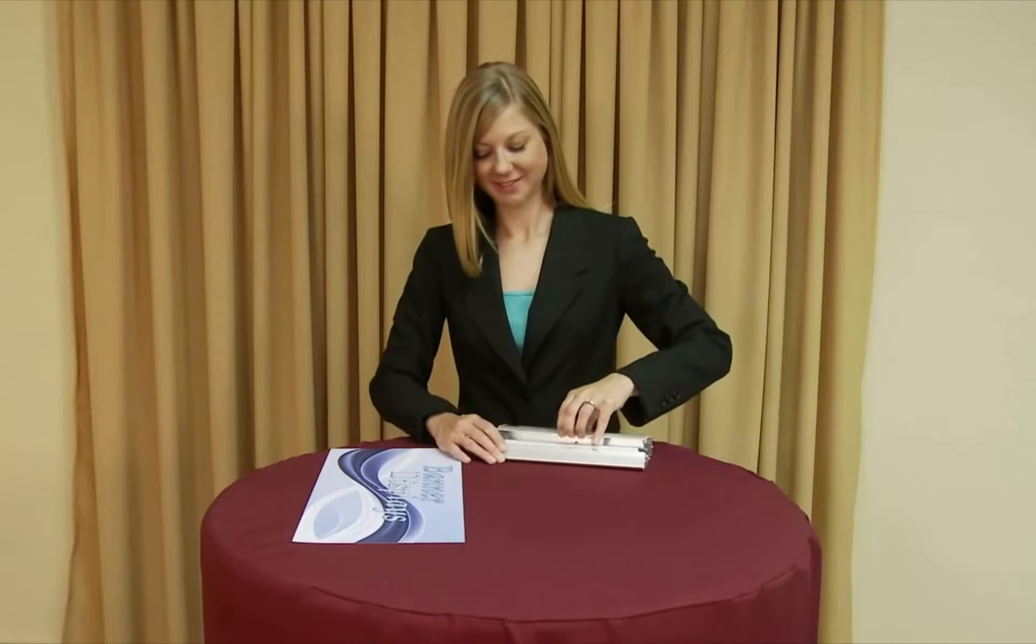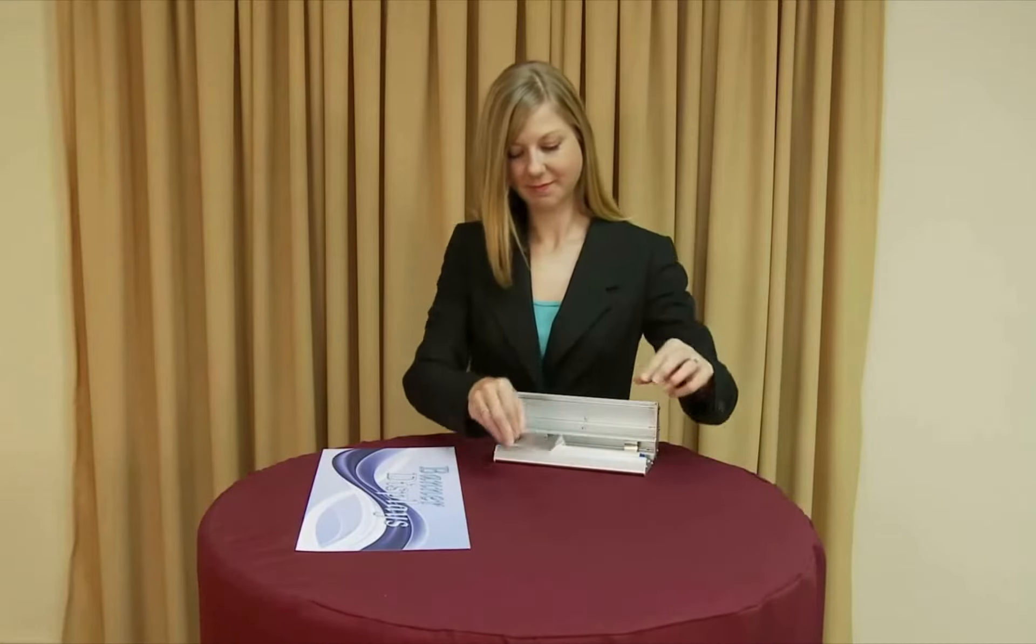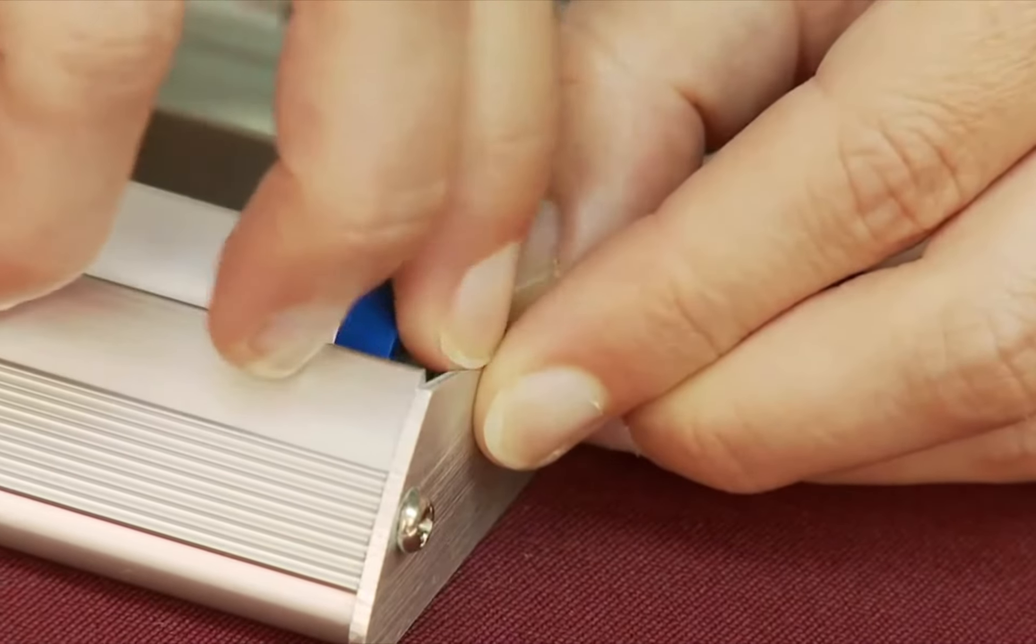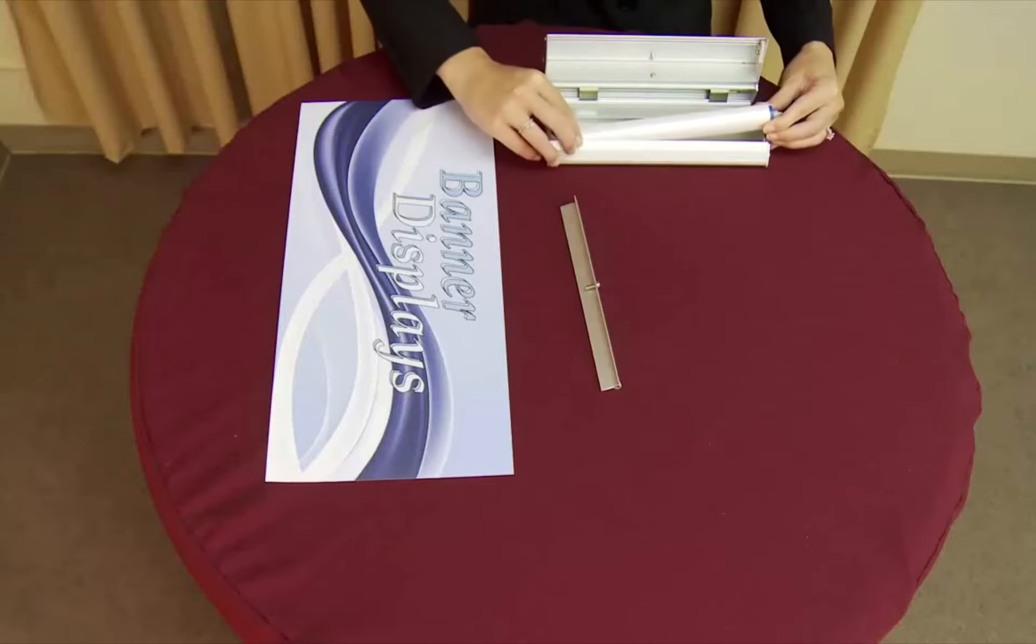Open the base unit and remove the banner rail and roller with leader. Release the roller by pressing the buttons on the side and lifting it upwards.